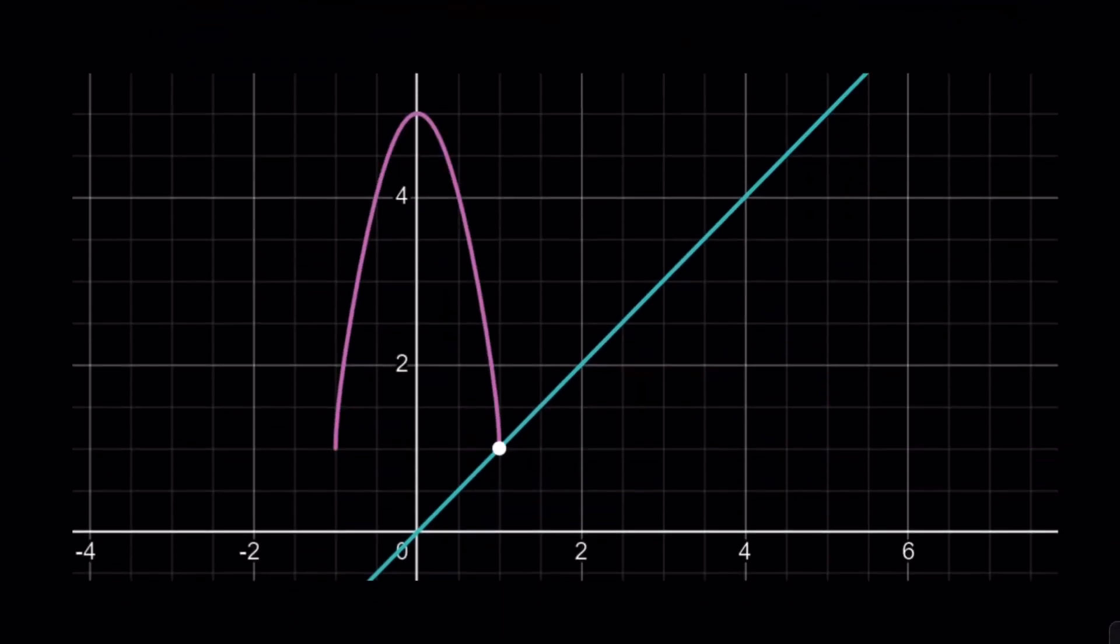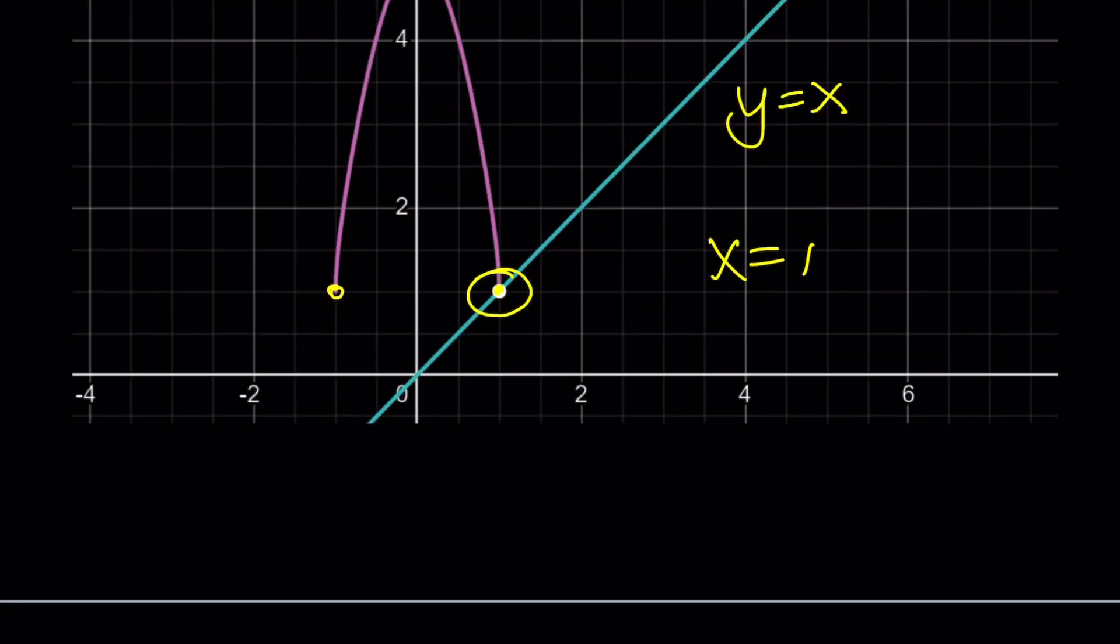First of all, the graph of 5 to the power square root of 1 minus x squared, along with y equals x. And they intersect at a single point, which is 1 comma 1, so x equals 1 from here. And notice that our exponential function is only going to be between negative 1 and 1. That's what I meant by those values.